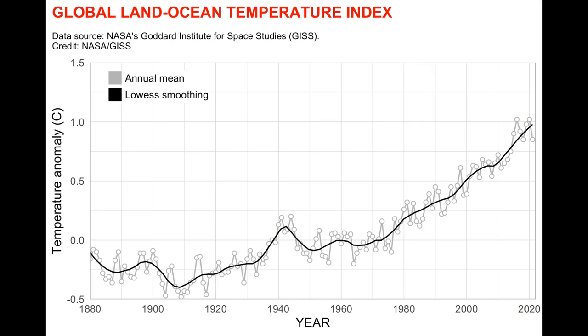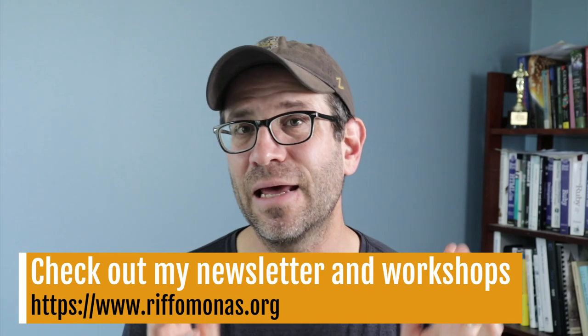Hey folks, we're in the midst of stepping through a variety of approaches at looking at temperature variation over the past 140 years or so. In the last episode we generated a plot called the global temperature index plot — basically showing the deviation in average temperature relative to the average between 1951 and 1980. We drew that as a line plot and fit a line through the curve, trying to replicate something shown on NASA's website.